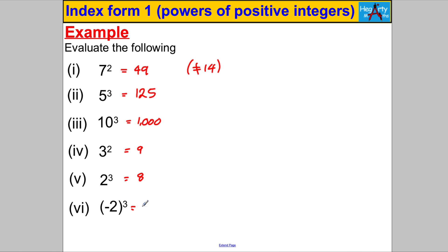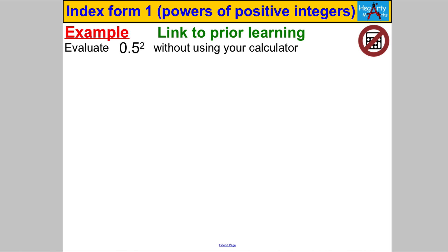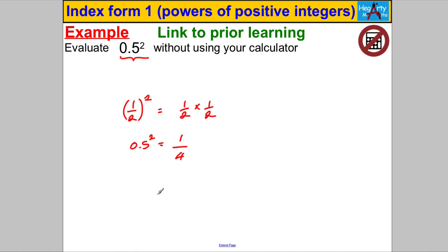3 squared = 3×3 = 9. 2 cubed = 2×2×2 = 8. Negative 2 cubed: (−2)×(−2)×(−2) = −8. Now evaluate 0.5 squared without a calculator. I'd say 0.5 is the same as one half, so one half squared means one half multiplied by itself — multiply numerators together (1×1) and denominators together (2×2), giving one quarter, or 0.25 as a decimal. So easy if you know your fractions and what squared means.